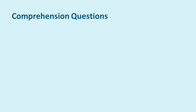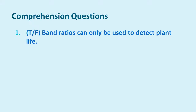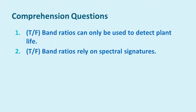Now that we have a good idea of what band ratios do, let's move on to a few comprehension questions. First, true or false: band ratios can only be used to detect plant life. Two, true or false: band ratios rely on spectral signatures. Three, how do band ratios work? Feel free to pause this video and take a moment to consider those answers. The answers to these questions will appear in part 2 of this video.